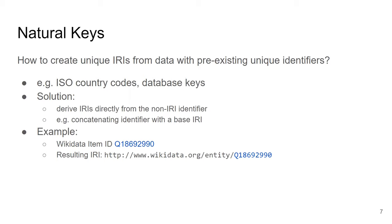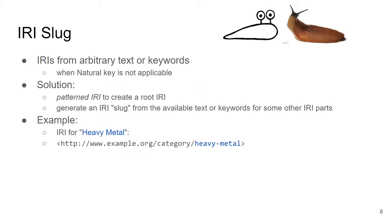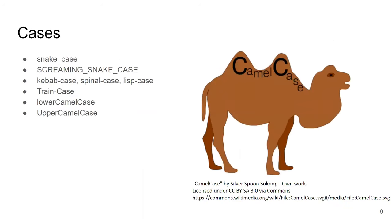The next pattern, IRI slug, deals with the situation when we do not have a suitable key to use in our IRI and we have text — possibly with multiple words — and need to deal with that. There are many options: for instance, 'heavy metal' becomes 'heavy-metal' by converting to lowercase and replacing spaces with a minus sign. You can use whichever approach you want, but you should clearly design your IRI patterns to include those choices and then stick to them.